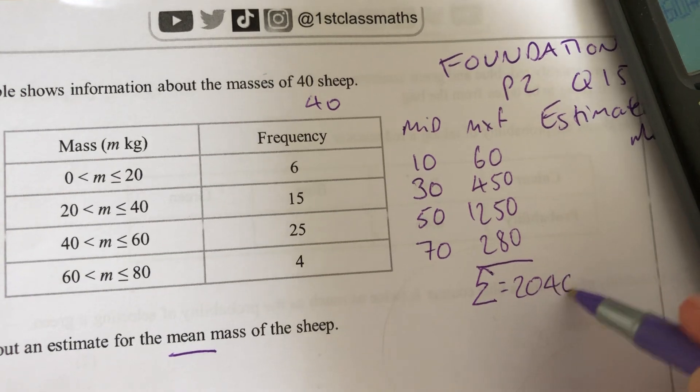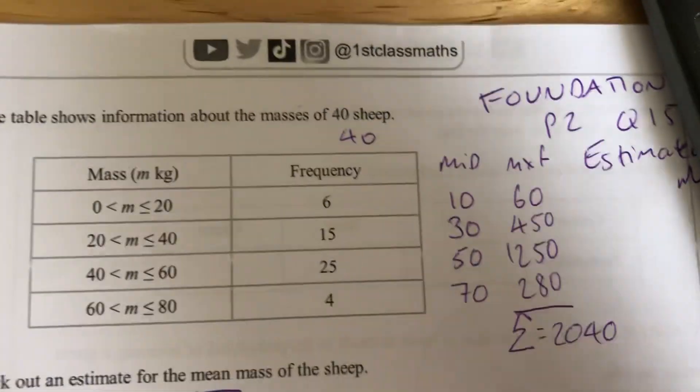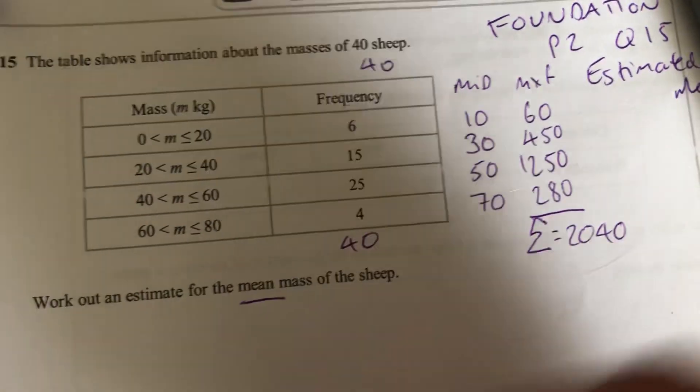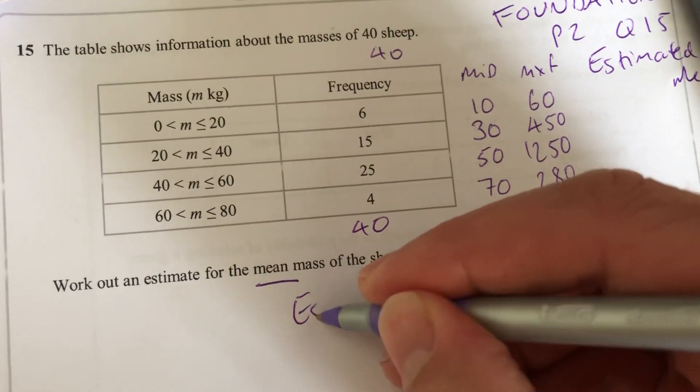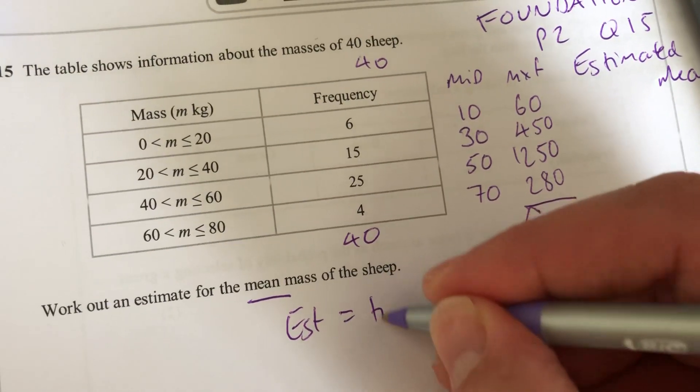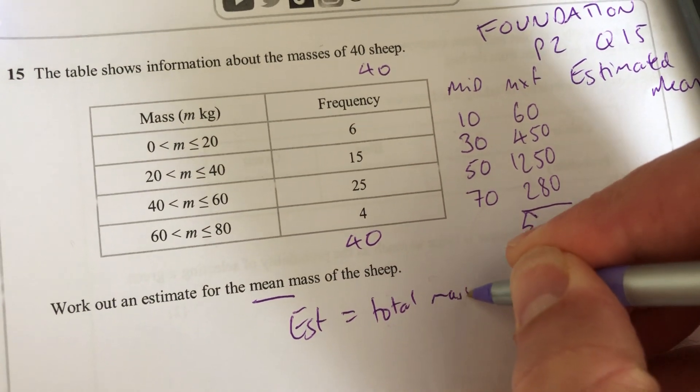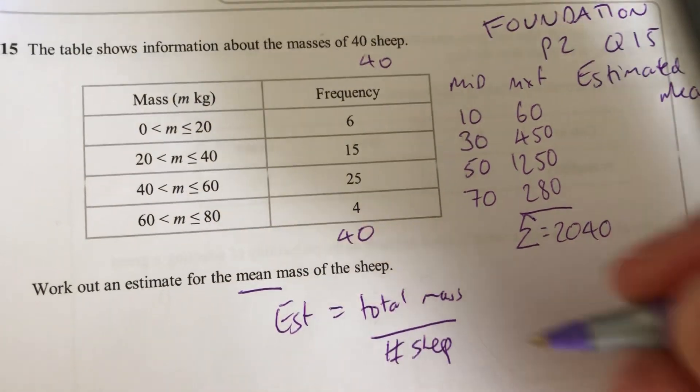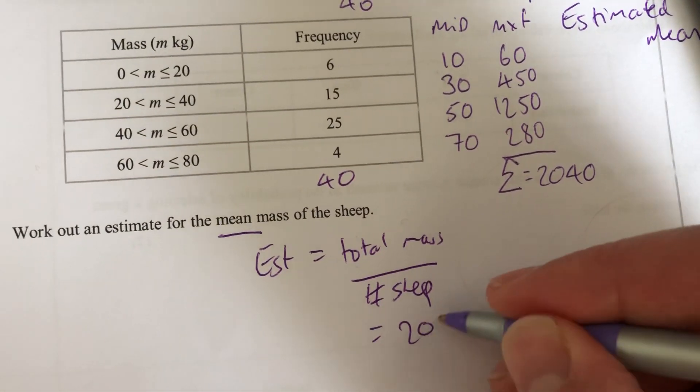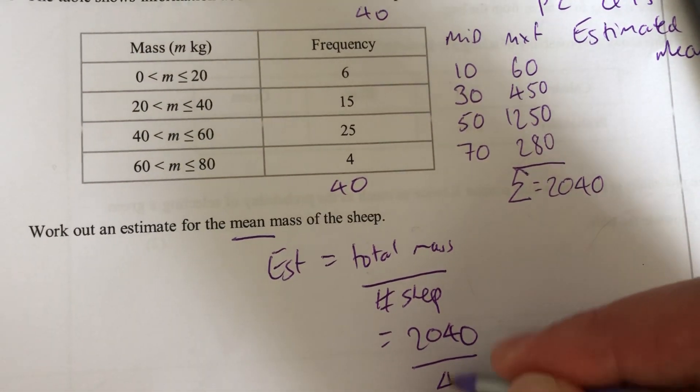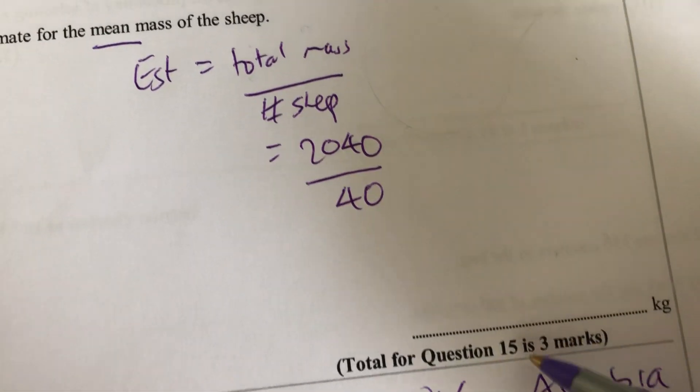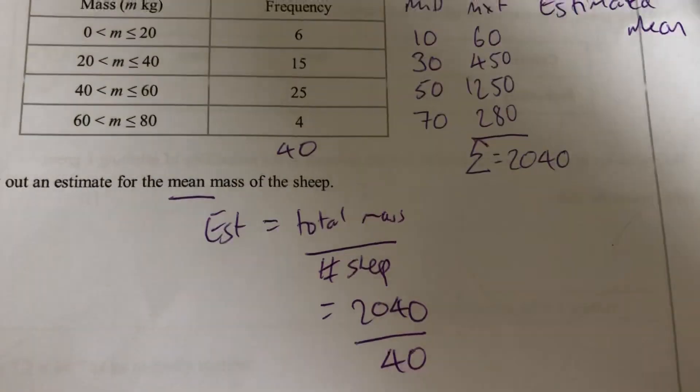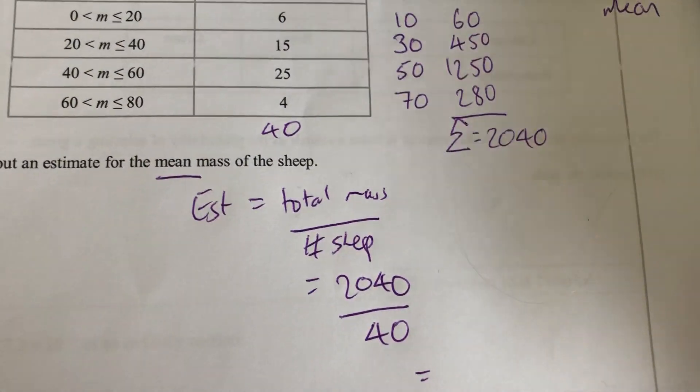So that's the total mass shared between those 40 sheep. So now what we have to do to get the estimated mean, we take the total mass and we divide it by the number of sheep. So I'm going to do 2,040 divided by 40. And this is a 3 mark question, so I'm hoping we'll get a couple of marks for that, a mark for that step, and then a mark for the final answer.